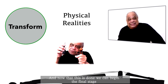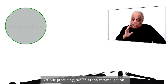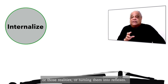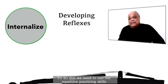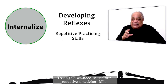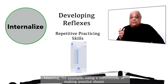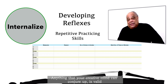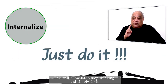Now that this is done, we can begin the final stage of our practicing, which is the internalization of those realities — or turning them into reflexes. To do this we need to use repetitive practicing skills, meaning, for example, using a metronome or making practice sheets. Anything that your creative mind can conjure up is valid — it's worth trying. This will allow us to stop thinking and simply do it.